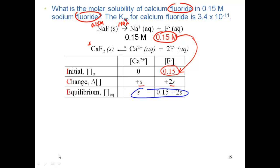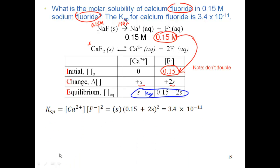These are related through Ksp. Writing the Ksp expression for the insoluble salt: Ksp = [Ca²⁺][F⁻]² = S × (0.15 + 2S)². To simplify, I compare 0.15 — which is 1.5×10⁻¹ — to the Ksp of 3.4×10⁻¹¹. That's a difference of 10 orders of magnitude, well above the threshold of 3 or more, so I can drop the 2S term.